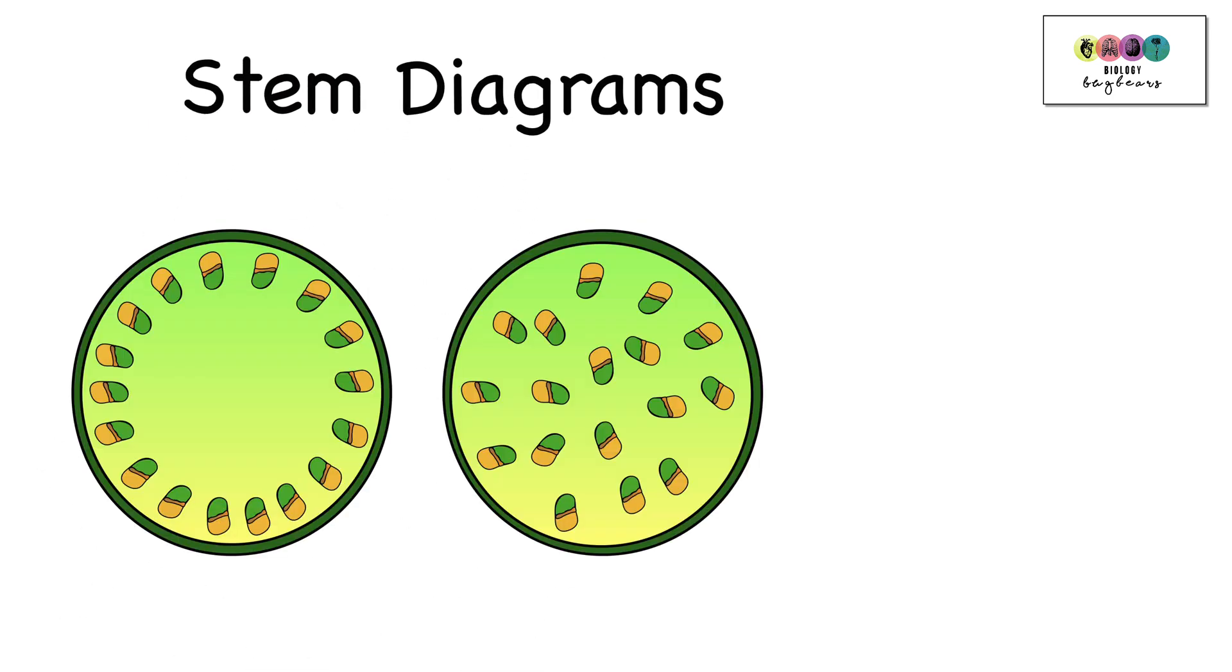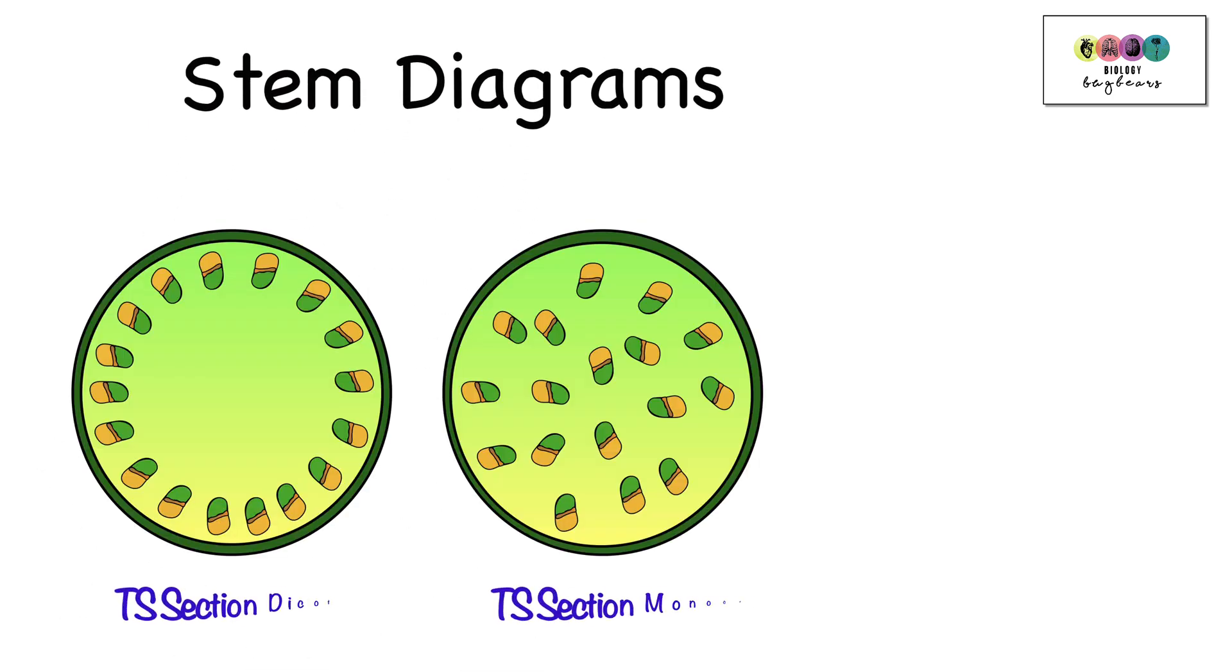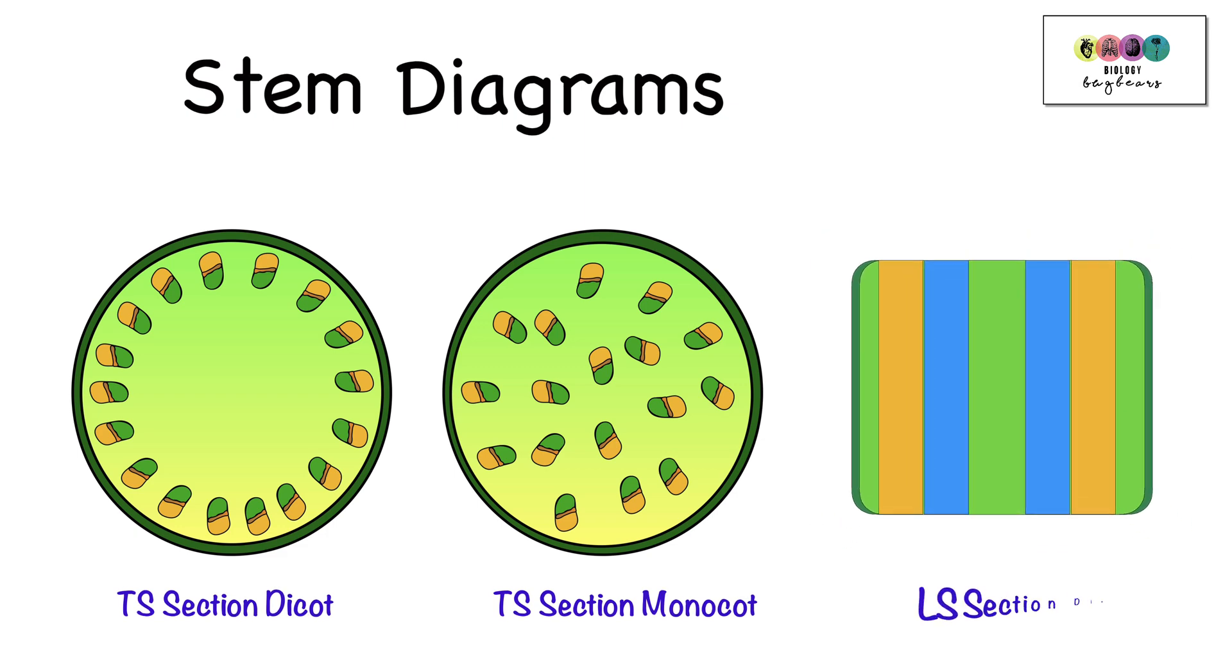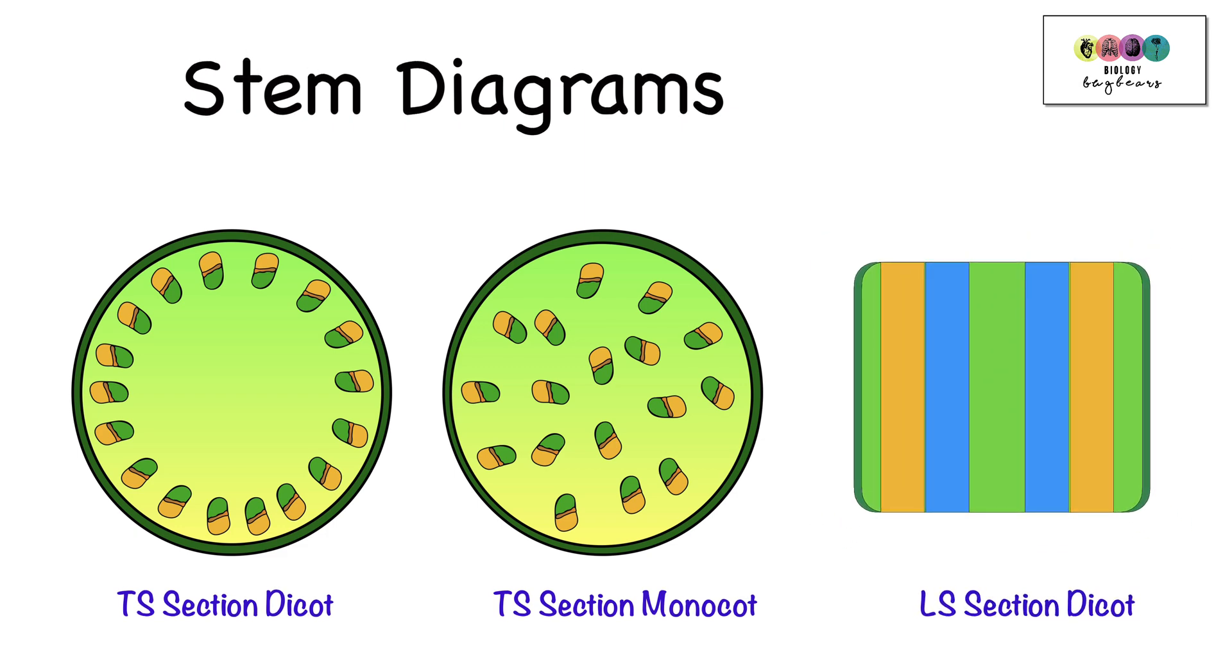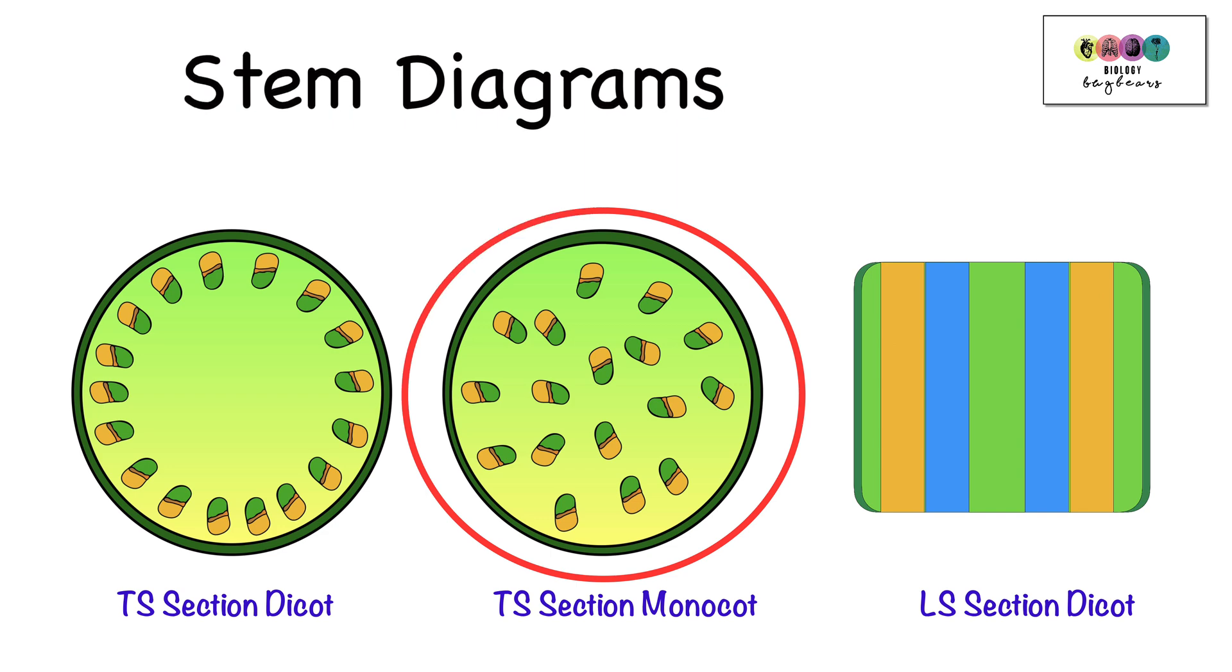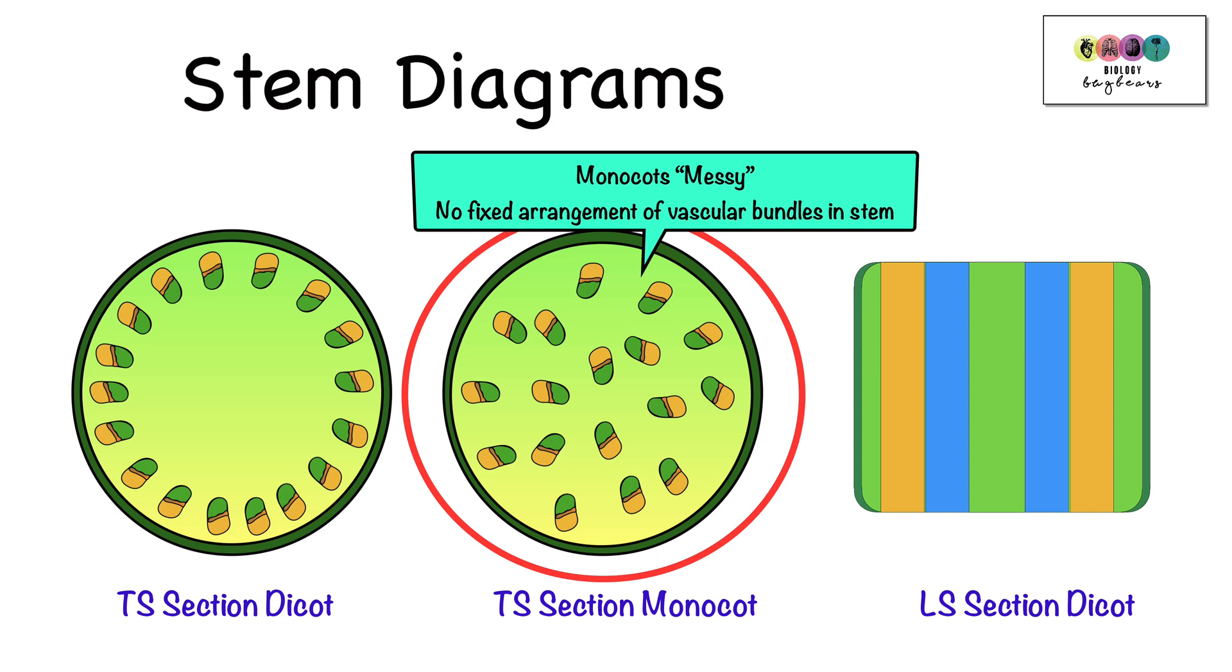So let's move on to the stem diagrams. And there are two transverse sections and one LS section that you need to be able to draw and to label. And it's the usual labels, label dermal, ground and vascular tissue. But before we add in those labels, when you look at the transverse sections of the dicot stem and the monocot stem, if the labels were not there, how would you know which was dicot and which was monocot? Well, we always remember in our class because we say monocots are messy. We don't write messy in our exam, but we just know that in monocots, there's no fixed arrangement of those vascular bundles. They are just scattered throughout the stem.